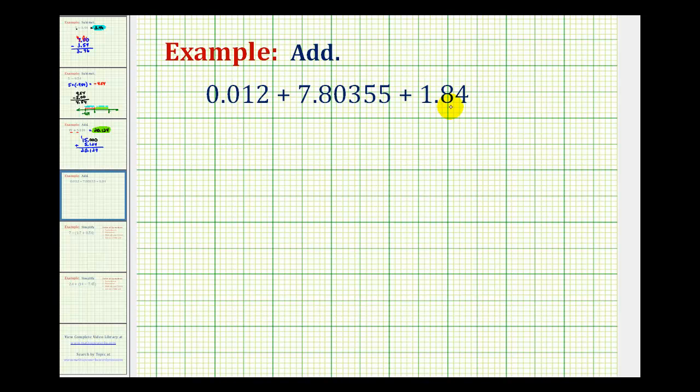To determine the sum of several decimals, we want to write the sum vertically, lining up the corresponding place values. So starting with the first decimal, we'll have 0.012, and then for the next decimal, we want to have 7.80355.